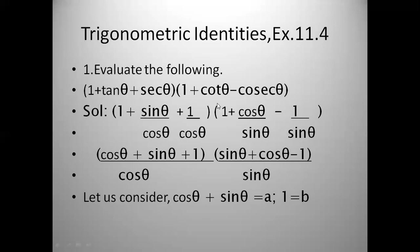Next, 1 plus cot θ, where cot θ is cos θ/sin θ, minus cosec θ, which is the multiplicative inverse of sin θ, so minus 1/sin θ. Now, taking the LCM for the first bracket — the denominators are 1, cos θ, and cos θ — the LCM is cos θ.